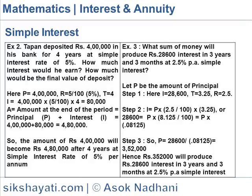Here P = 4,00,000, R = 5% = 5/100, T = 4. So the interest earned in 4 years: I = 4,00,000 × (5/100) × 4 = 80,000. A = P + I = 4,00,000 + 80,000 = 4,80,000. So the amount of Rs.400,000 will become Rs.480,000 after 4 years at Simple Interest Rate of 5% per annum.